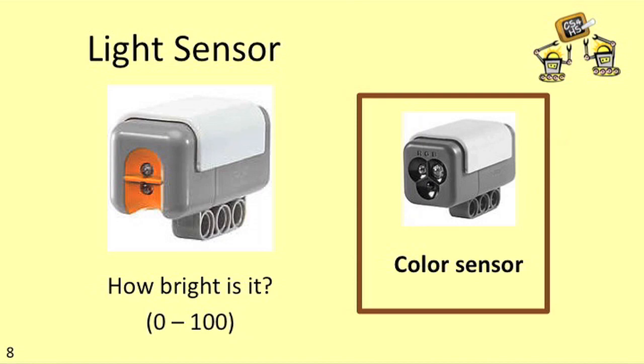If you buy the commercial kit, instead of a light sensor, you'll get what's called a color sensor which can sense light and also sense six different colors.